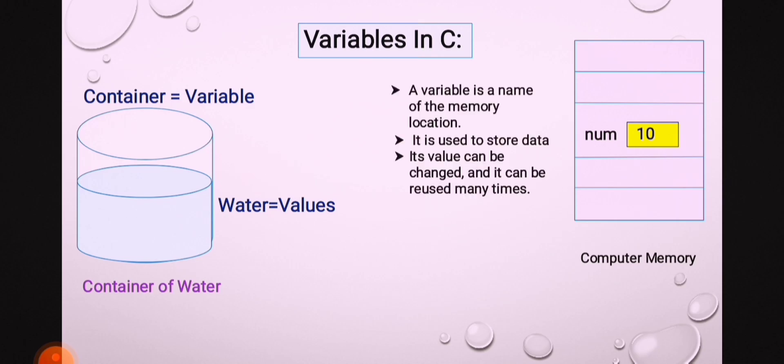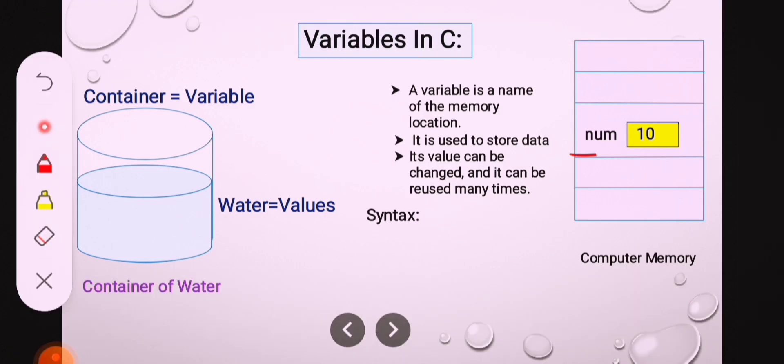This is the memory, computer memory. Num is the name of the variable and 10 is its value. Num is the name of the variable, or the name of this memory location. It is used to store data. This value we can change — that's why it is called a variable. This num value we can change throughout the program, so it is called a variable.